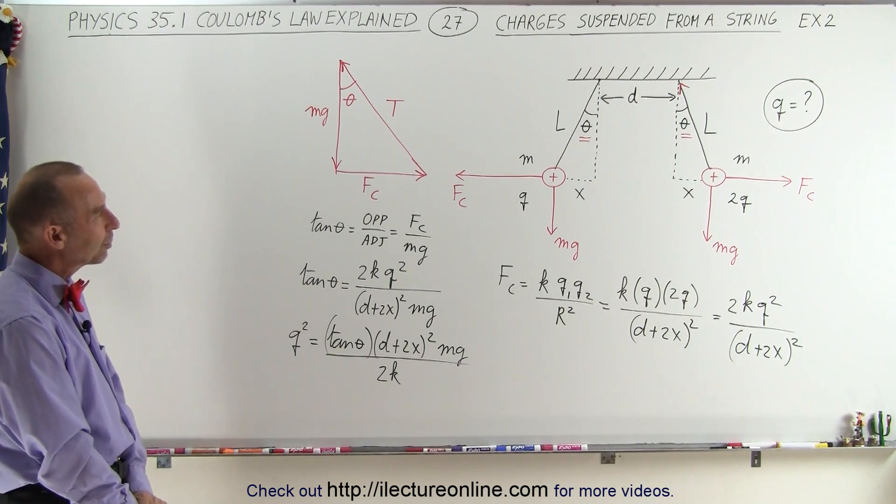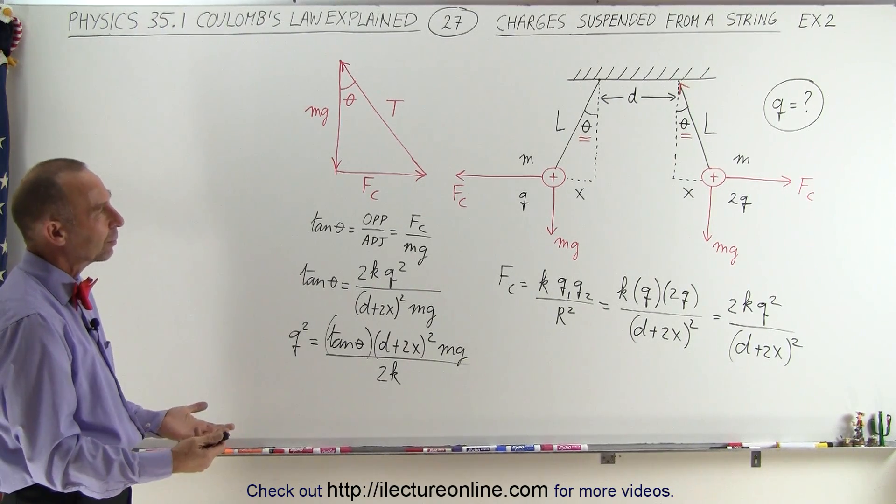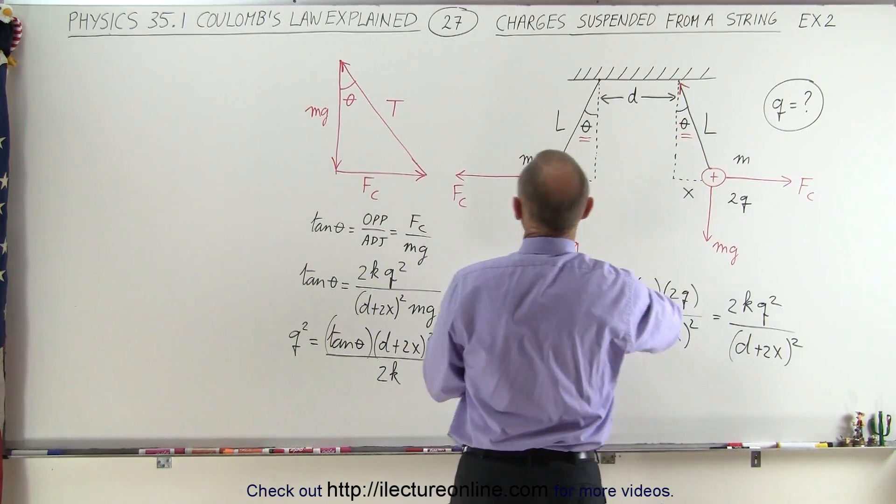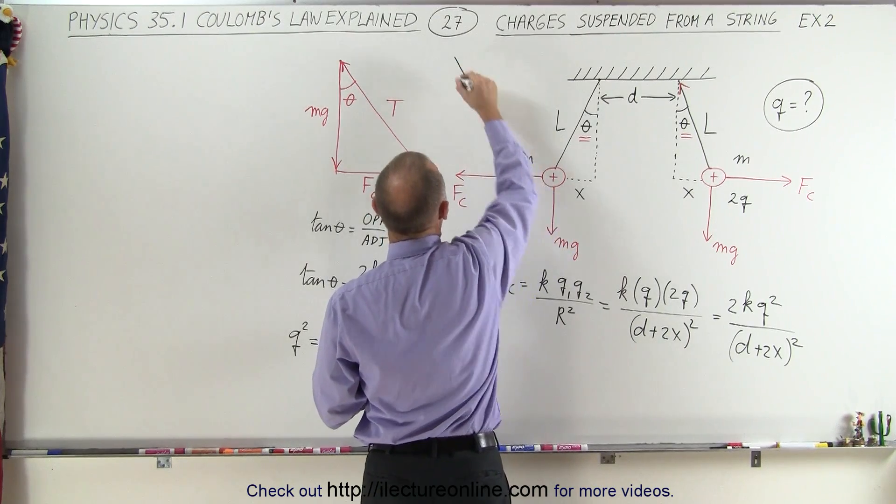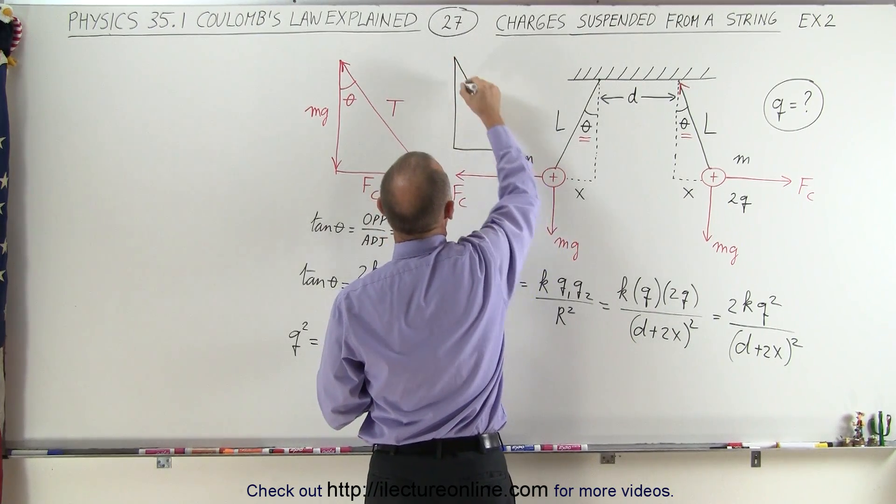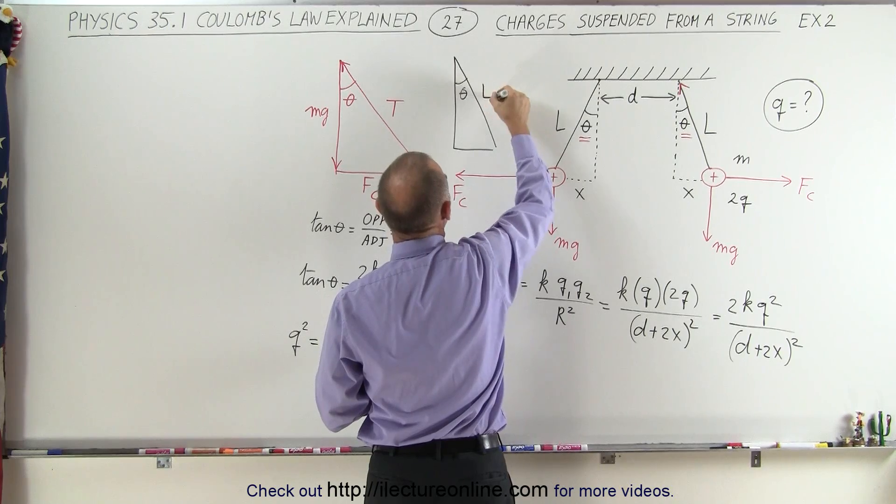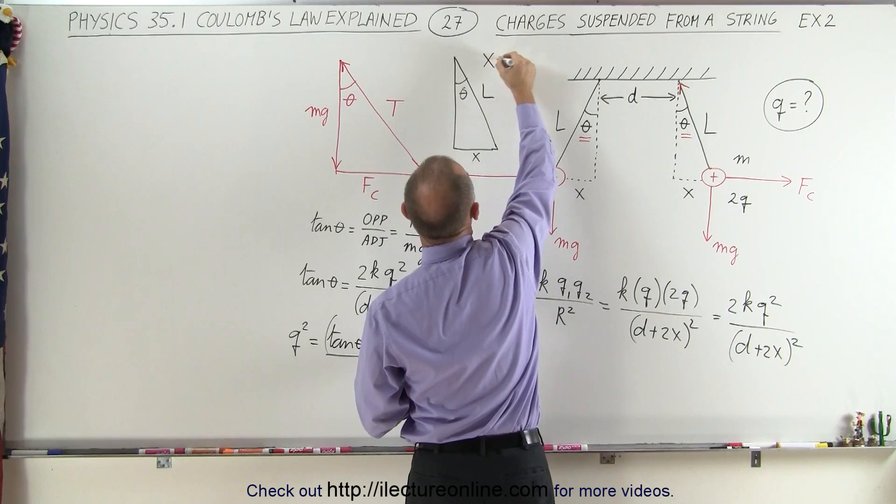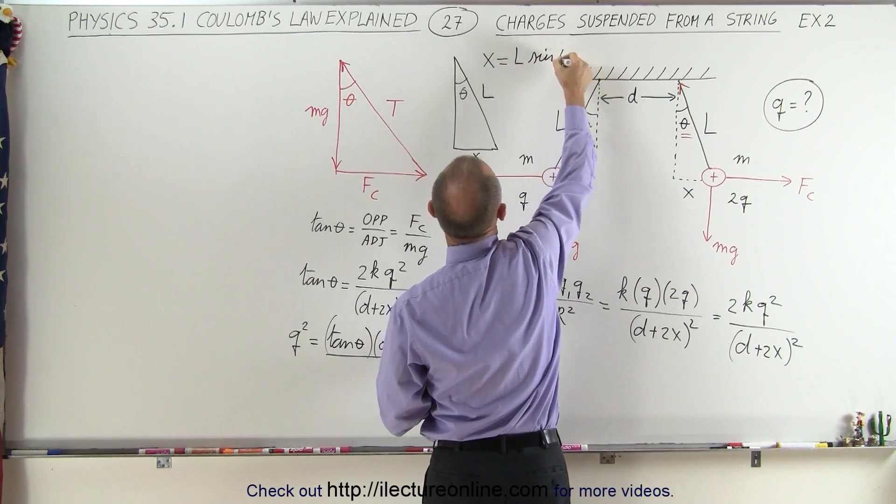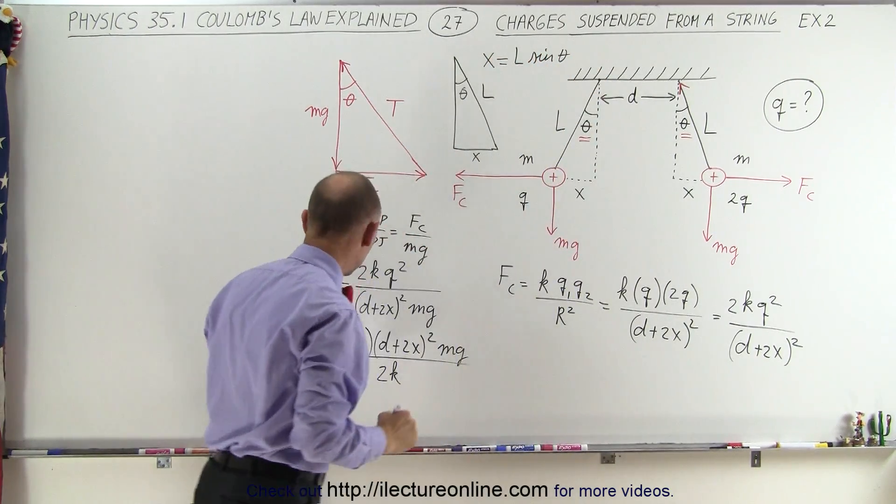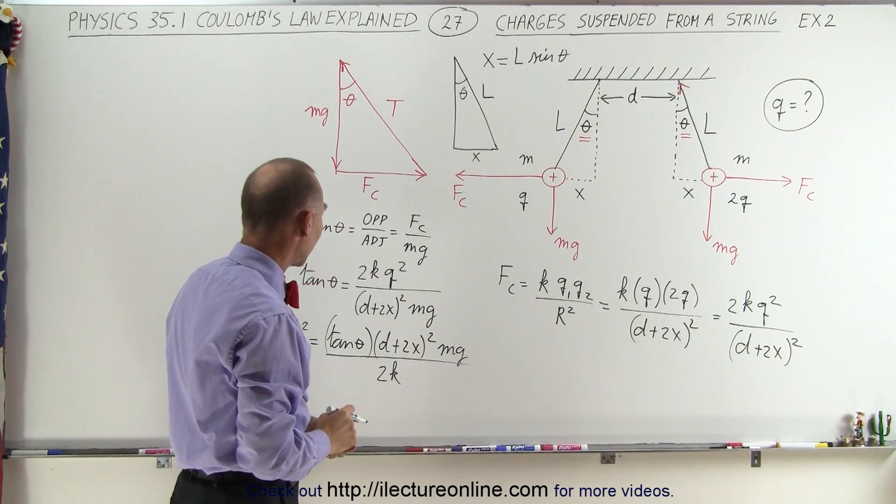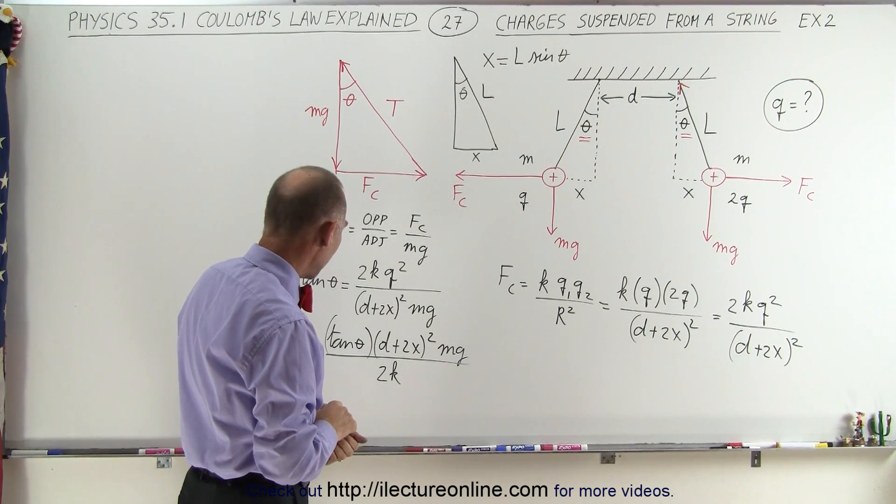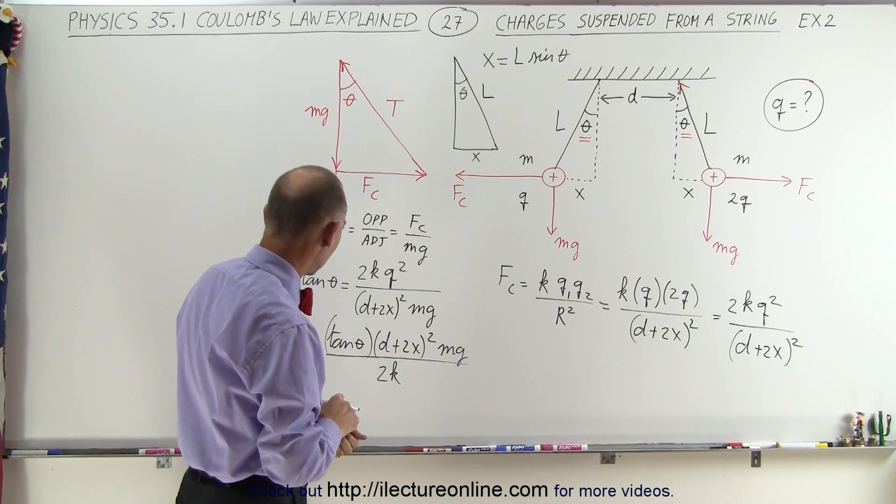But we may not be too happy with the constant of D + 2X, because what is X equal to? Well, we can find out what X is equal to. Let's take that triangle and draw it over here. We have the angle theta, we have the length for the string, and we have X, and so here we can say that X is equal to the hypotenuse L times the sine of theta. So we could replace 2X by 2L times the sine of theta.